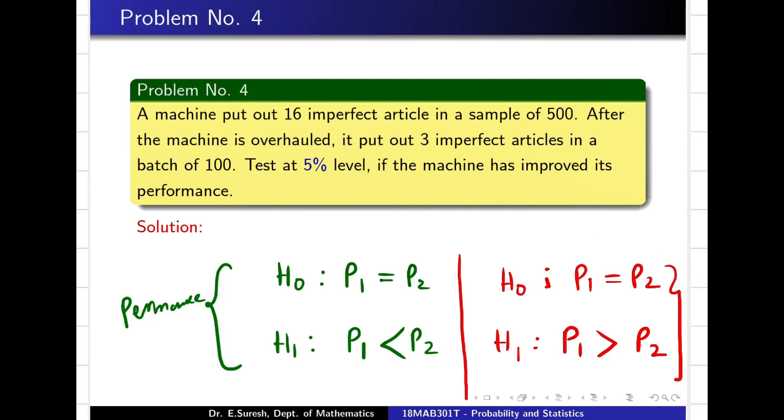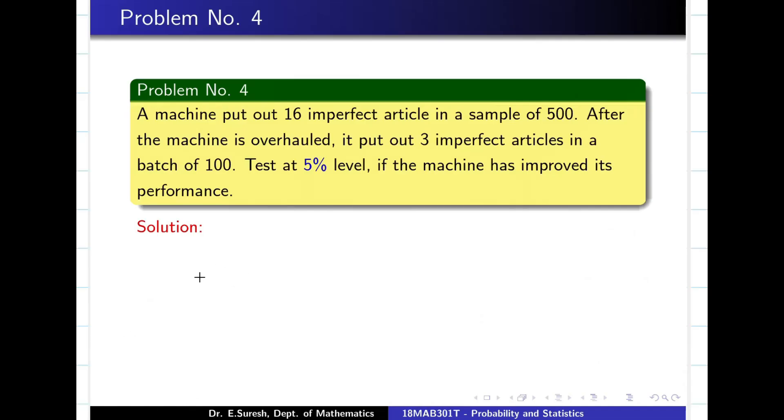This is dealing with defects. You have to choose according to your problem. Let us see what the problem is given. N1 stands for 500 samples. Proportion is 16 out of 500 is wrong. After overhauling or after repairing, what would happen? Now N2, P2 we have to begin. After repairing, I am getting 3 imperfect articles out of 100. So N2 is 100, P2 is 3 by 100.